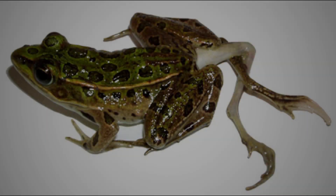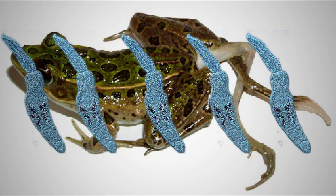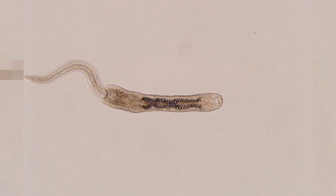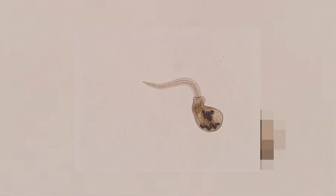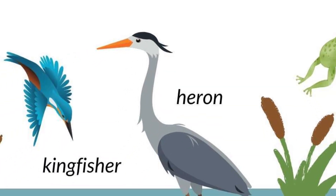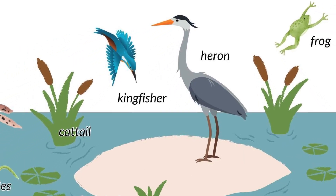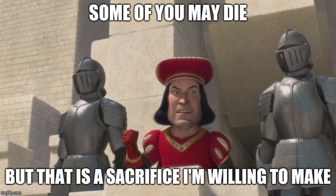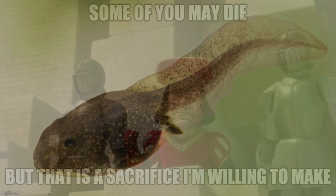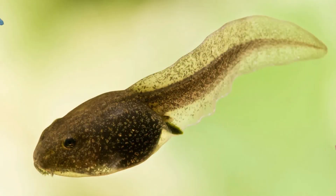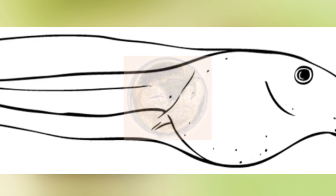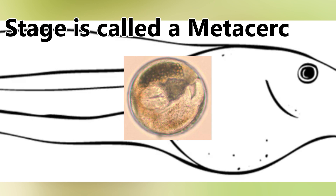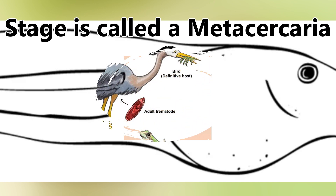But back to our frog parasite. After asexually reproducing in the snail, these cercariae are released into the water in the thousands, and they swim around looking for a tadpole to infect, swimming until they either bump into a tadpole or they die. Once a parasite does find a tadpole, it will penetrate the skin and make its way to the limb bud of the tadpole. The limb bud is the region where the frog will develop its legs, and this is where the parasite chooses to encyst and wait for a hungry bird to come around so it can restart this life cycle all over again.